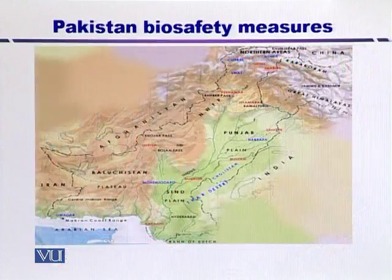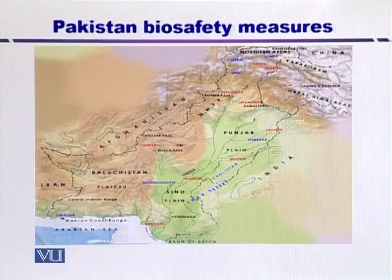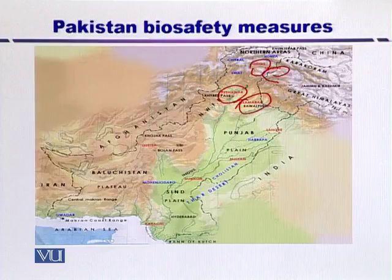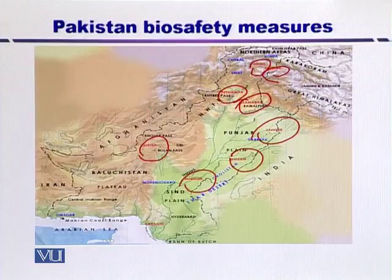This map represents the centers of biotechnology in Pakistan. These centers are located in Gilgit, Skardu, Peshawar, Islamabad, Lahore, Multan, Sakkar, and Quetta, with the main center in Karachi.